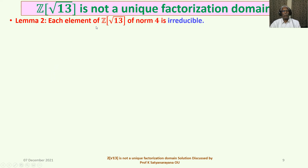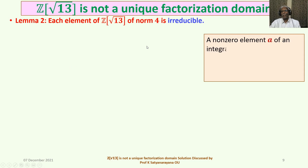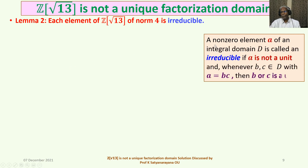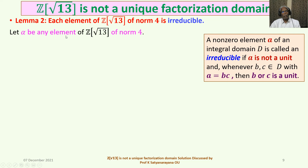Lemma 2: Each element of Z√13 of norm 4 is irreducible. Recall the definition: a non-zero element A in an integral domain D is called irreducible if A is not a unit and whenever A = BC, then either B or C is a unit. Let α be any element of Z√13 of norm 4. Then α is not a unit, because x is a unit if and only if N(x) = 1, and N(α) = 4 ≠ 1.